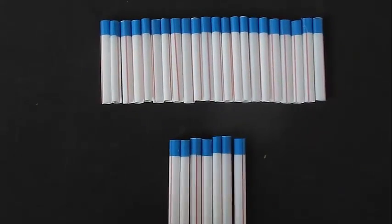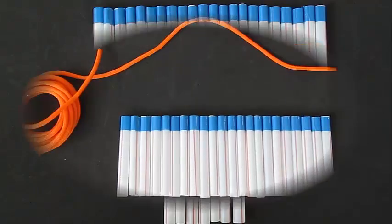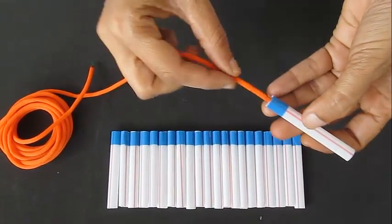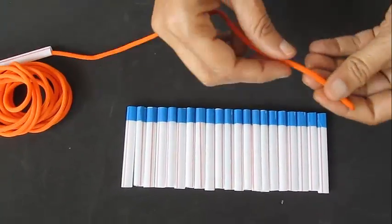You can see these set of 22 equal straws and 7 equal straws. Thread these straws using a string and tie the end together to make a ring.